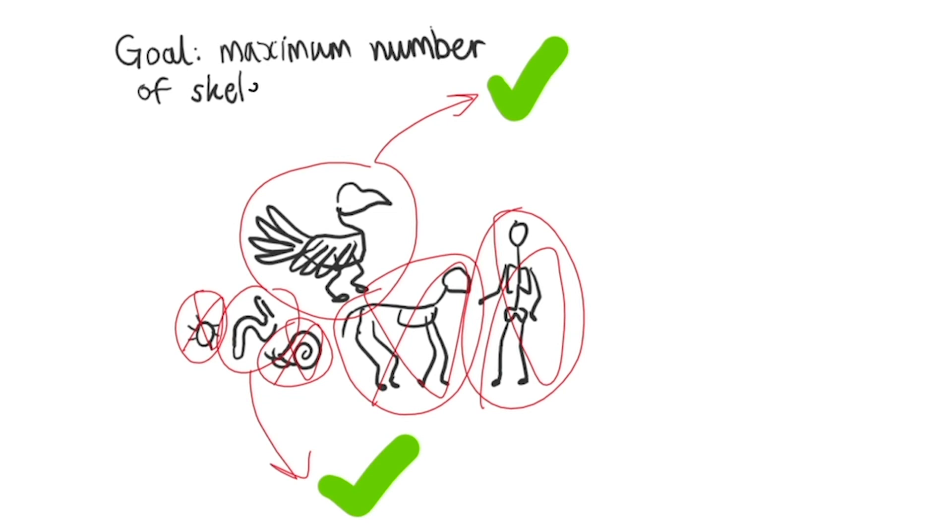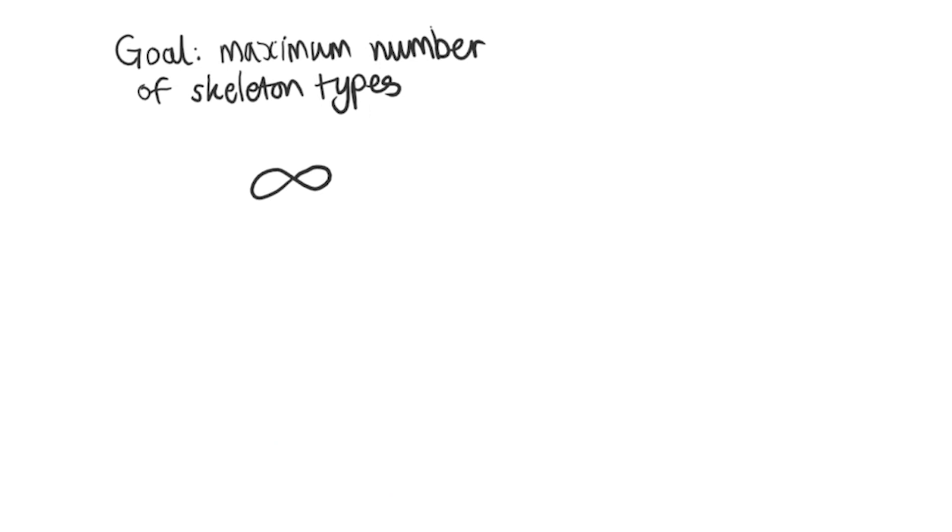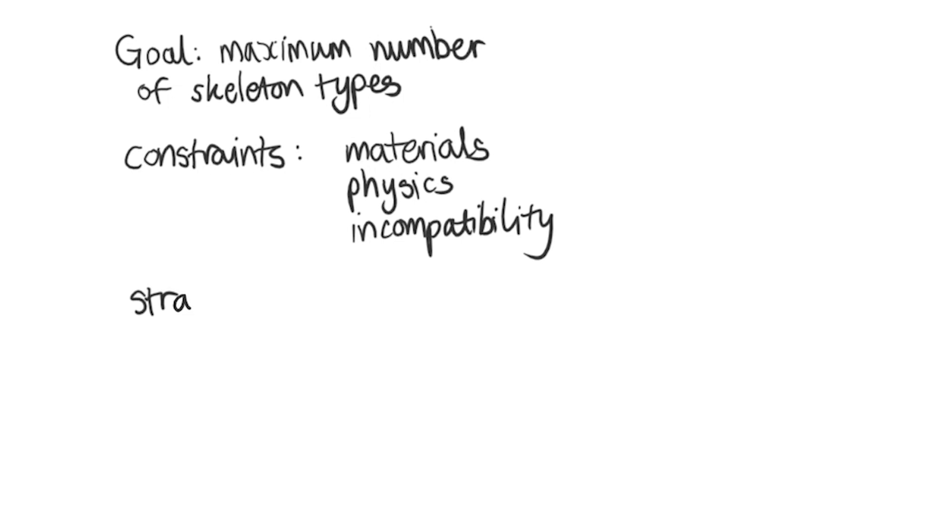Now you might think that the number of possible skeleton types and combinations could go on forever but surprisingly it is finite. This is because of constraints like the availability of materials to build skeletons, physical limitations like atmospheric pressure and the incompatibility of some skeleton types. The different strategies in this case are the different components that can be combined to make up a skeleton.